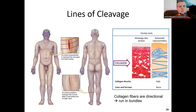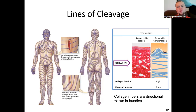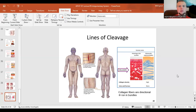The distensibility of skin is dictated by age and ethnicity — older skin is less distensible. A microscopic histological section shows that high collagen density means greater distensibility and pliability. Those collagen fibers run in directional bundles, and from those directional bundles we can find the lines of cleavage throughout the body. That concludes our lecture on the integumentary system.